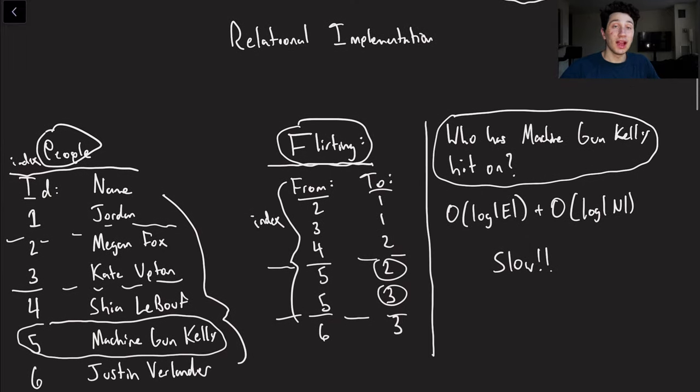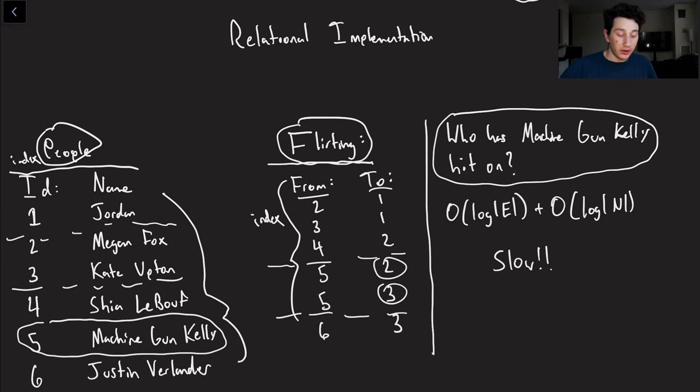So the first thing we would have to do is because this is an index we have to binary search it. So we binary search it and we end up seeing that he's flirted with people two and person three, and basically from there now we have to go back to our people table and binary search that and we can see that eventually he's flirted with Megan Fox and Kate Upton as was the case in our original graph. There are a couple of problems with that though. It takes a lot of time to actually find that result.